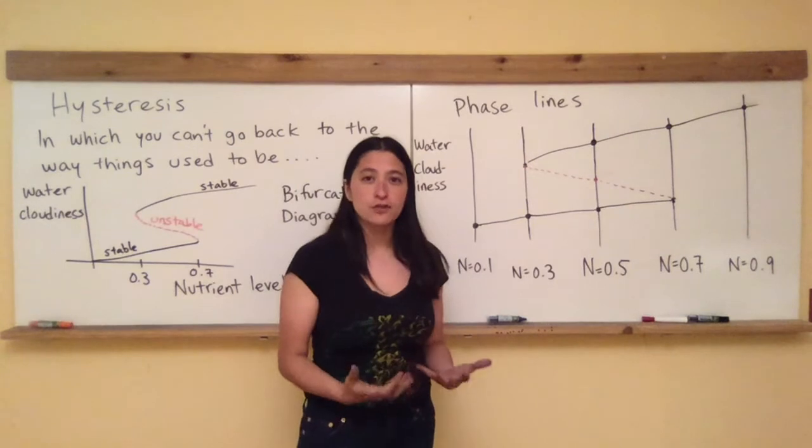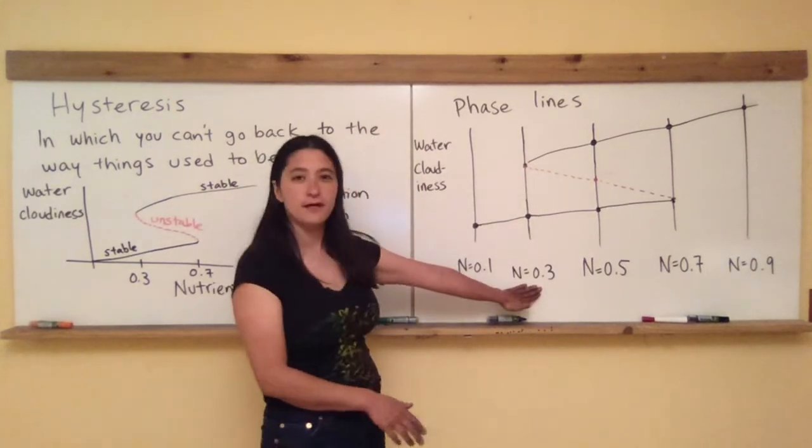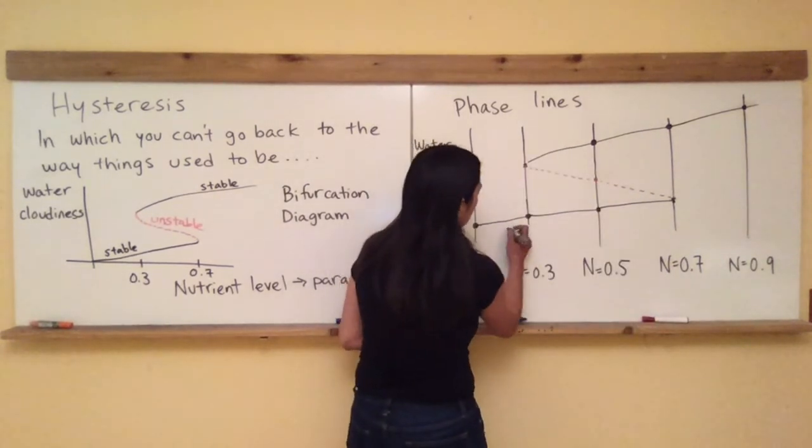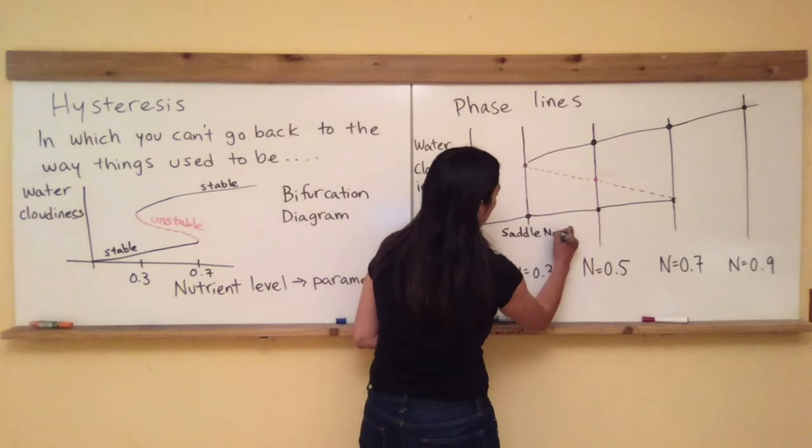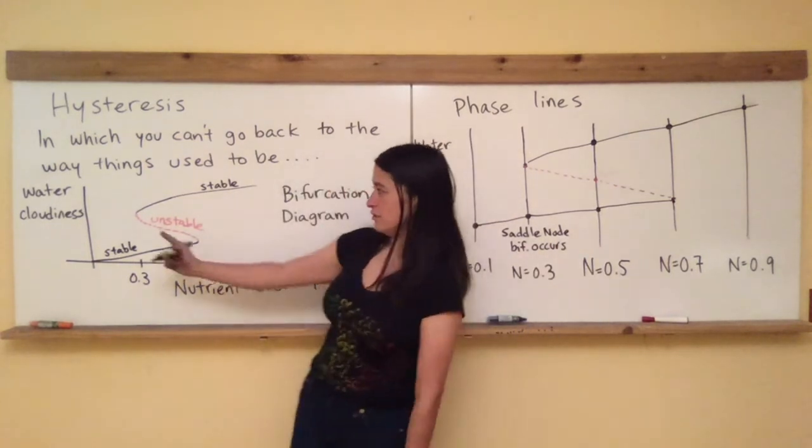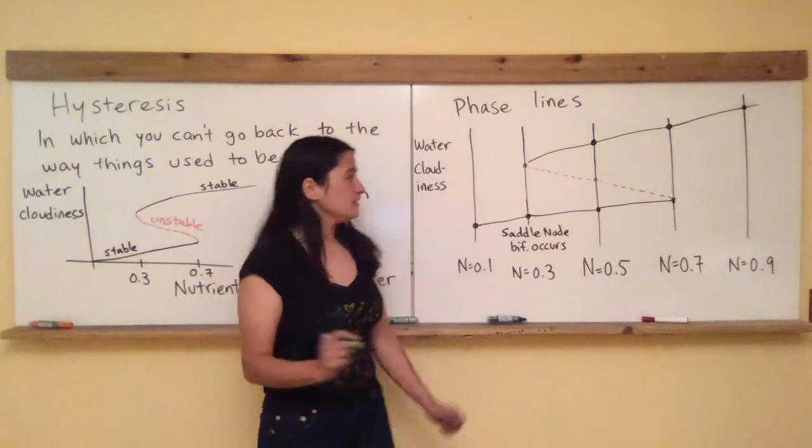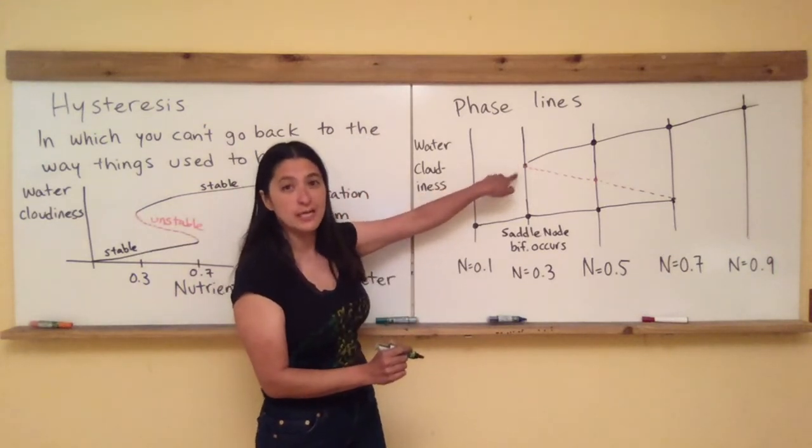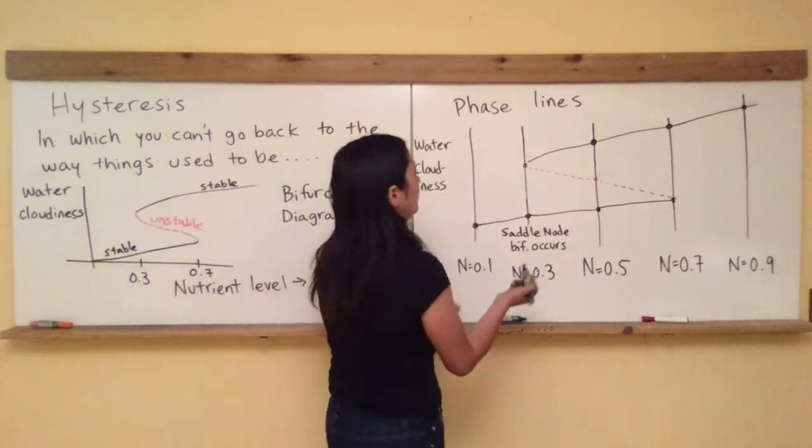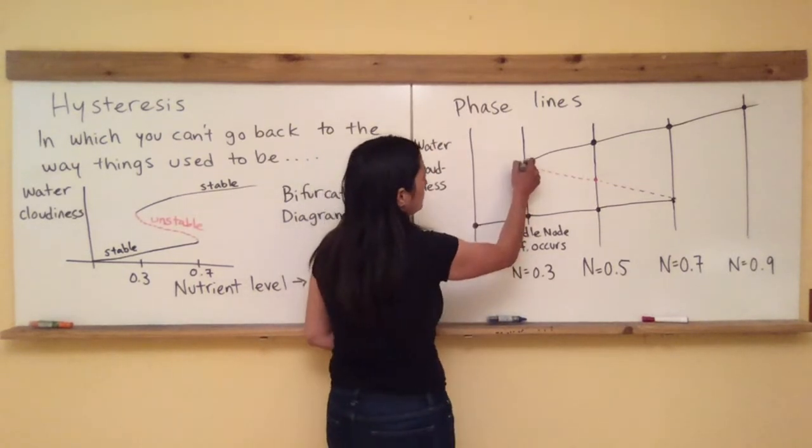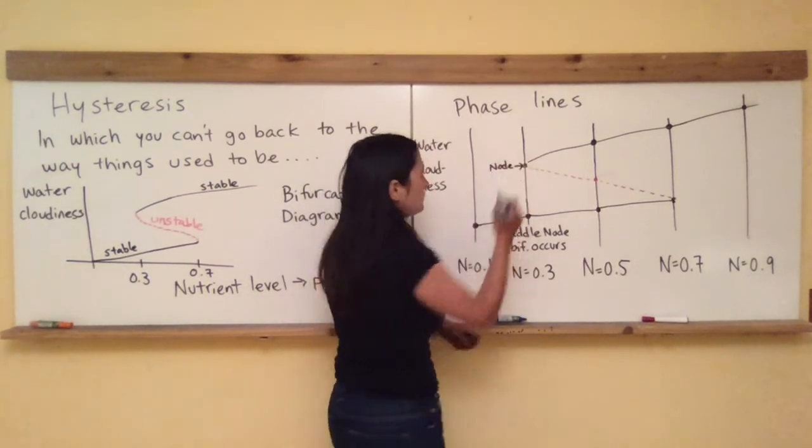That's why it's called the saddle node bifurcation because at the point of the bifurcation right here, N equals 0.3 is the place where the saddle node bifurcation occurs right here. That's where these two fixed points are just getting born. And you can see them as merged together as one, one node, which is stable from the bottom and unstable from the top. Sorry. Stable from the top and unstable from the bottom. And so right here, this is one node right there.